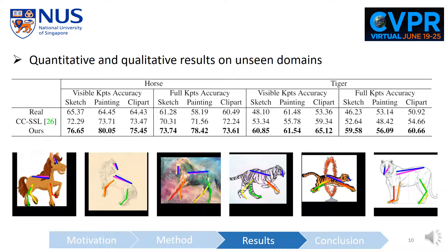We also apply our model to unseen animal domains, which includes the sketch, painting, and clip-art domains. We can see that our network can also generalize to these unseen domains and achieve state-of-the-art results.